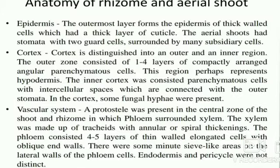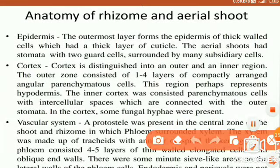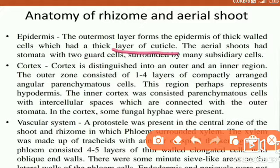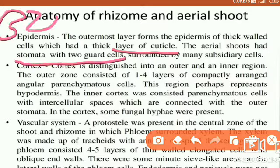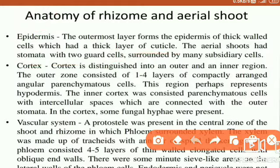Now we can see the rhizome and aerial shoot anatomy — this is the internal structure. First, the epidermis is the outermost layer. A cuticle is present; in the case of the rhizome, a thick layer of cuticle is present. The aerial shoot epidermis has stomata with two guard cells, surrounded by many subsidiary cells.